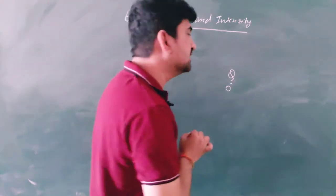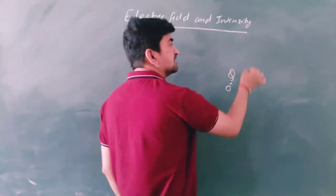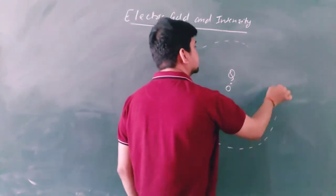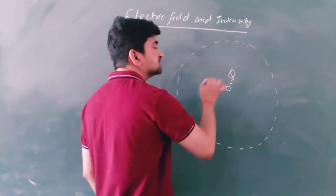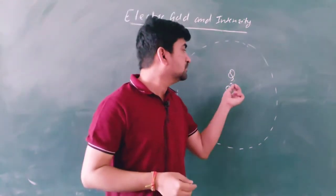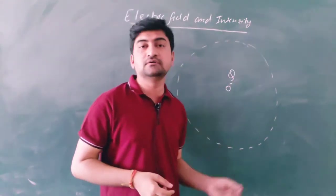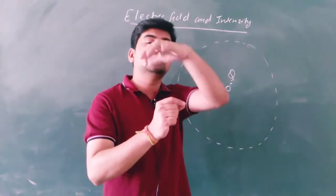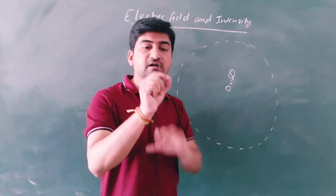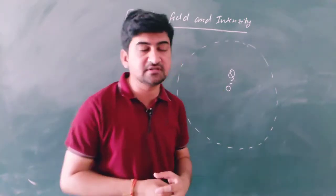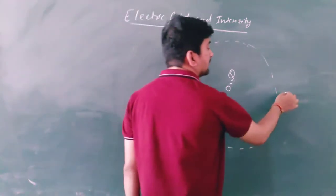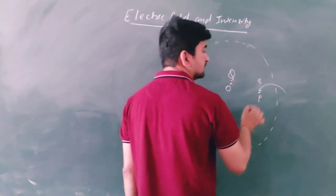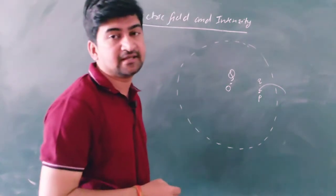This charge is placed here, and the electric field due to this charge is all around it. If we consider a point charge Q, then around the point charge — but in 3D — this is your sphere. The space or region around the charge is where another charge can experience a force.